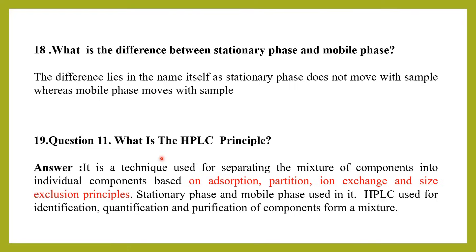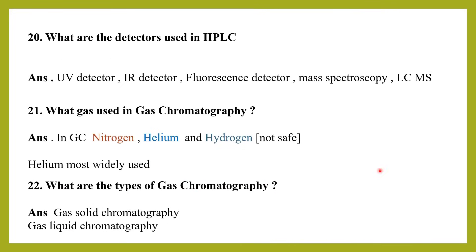What is the HPLC principle? HPLC is a technique used for separating a mixture of components into individual components based on adsorption, partition, ion exchange, and size exclusion principles. Stationary phase and mobile phase are used in the process. HPLC is used for identification, quantification, and purification of components from a mixture.